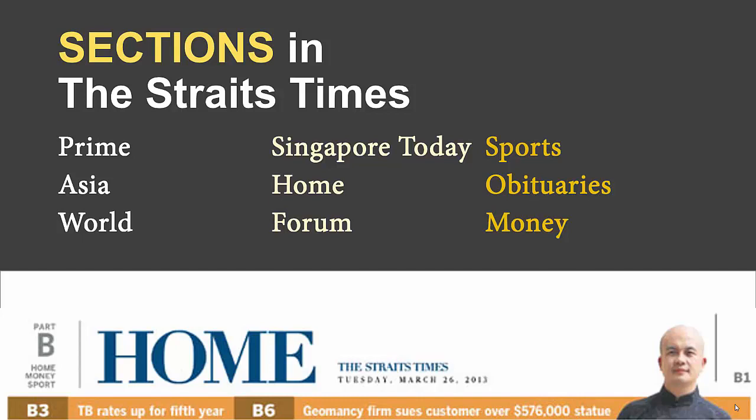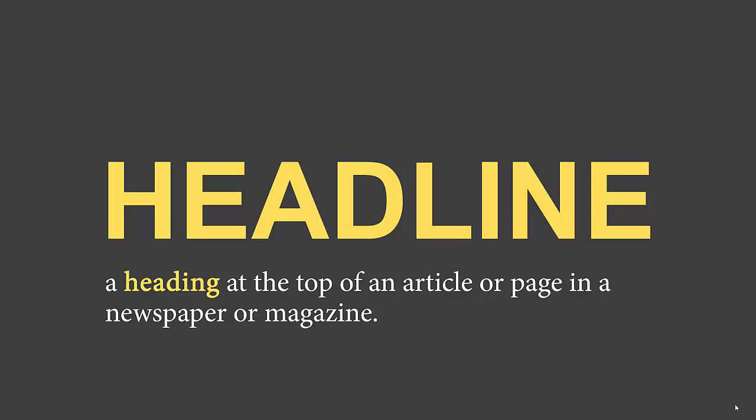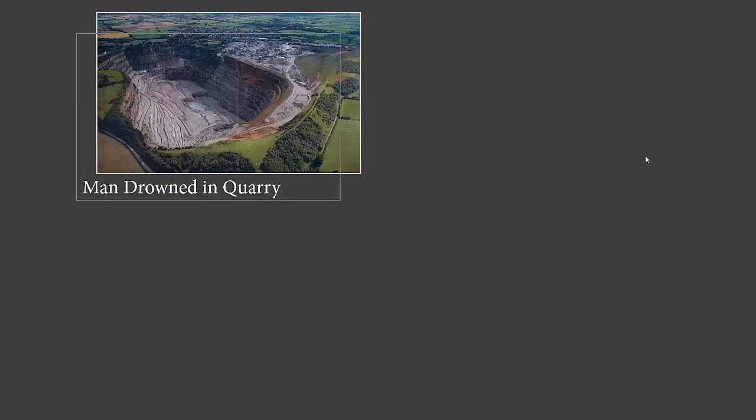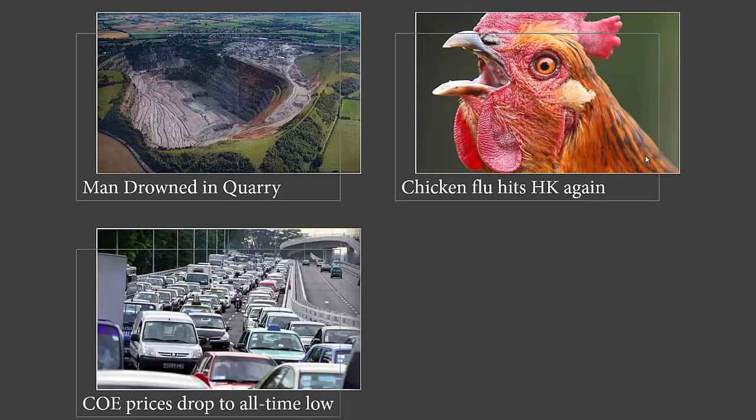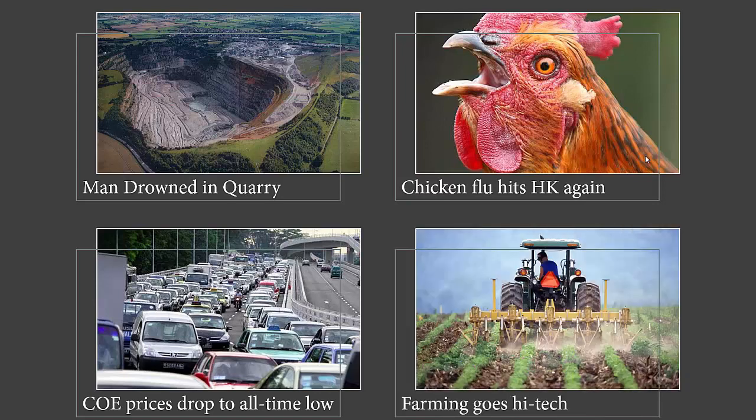The main thing we talk about next is the headline — it is a heading at the top of an article or page in a newspaper or magazine, designed to grab your attention. Here are a few examples: 'Men Draw Inquiry,' 'Chicken Flu Hits HK Again' — HK stands for Hong Kong — 'COE Prices Drop to All-Time Low.' COE stands for Certificate of Entitlement, required in Singapore for anyone who wishes to own a vehicle such as a van, car, or motorcycle.